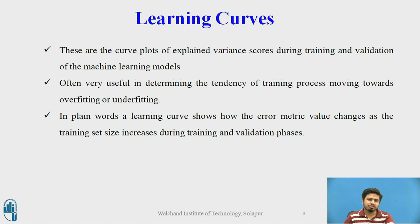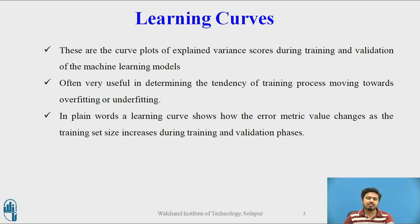In plain words, a learning curve shows how an error metric value changes as the training set size increases during the training and validation process. For our purpose we will be using explained variance as the error metric, though it could also be called a performance metric. You can find literature which uses other metrics such as accuracy or other metrics convenient to the context under which the ML model is being developed.